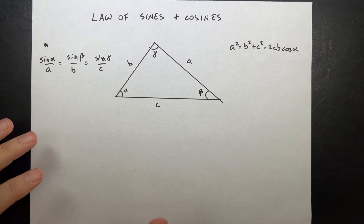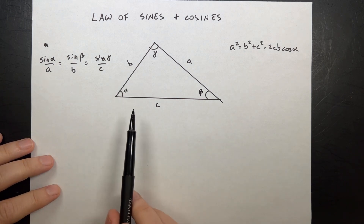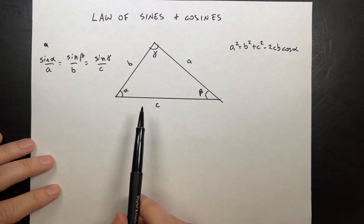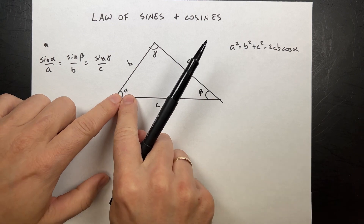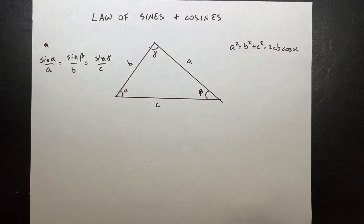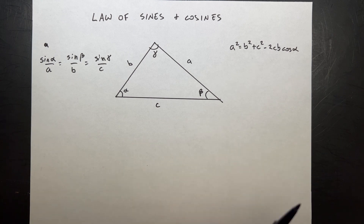So if I have a triangle, and that triangle has three angles — alpha, beta, gamma — and it has three sides — a, b, c. It's important to label these opposite. Sometimes I'll put this as capital A and lowercase a. I don't like that because then it's like a, a, and you can't tell the difference, but whatever.